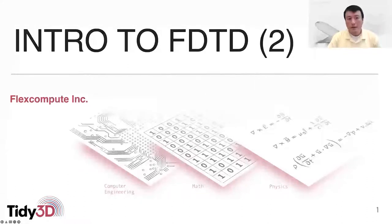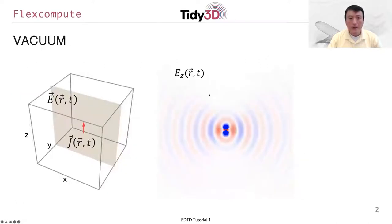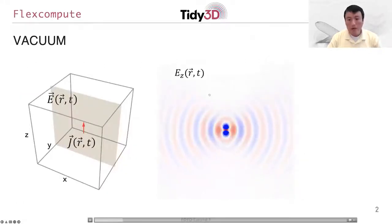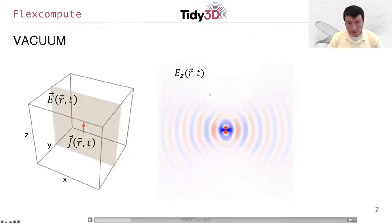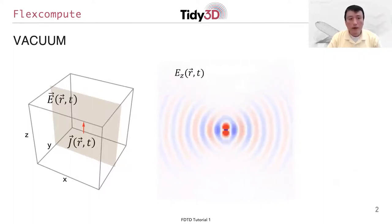This is a second video on introduction to the finite difference time domain method, or the FDTD method. I'm Shanhui Fan from FlexCompute. In the last video, we gave an introduction to the basic idea of the FDTD method and showed that you can generate a very nice movie visualizing how electromagnetic waves propagate inside a vacuum region.